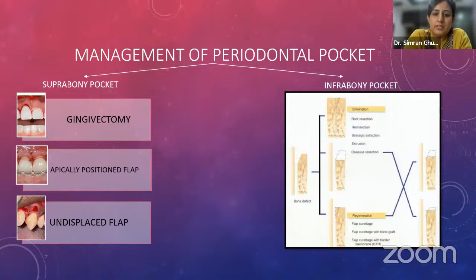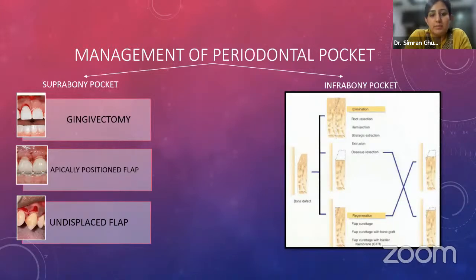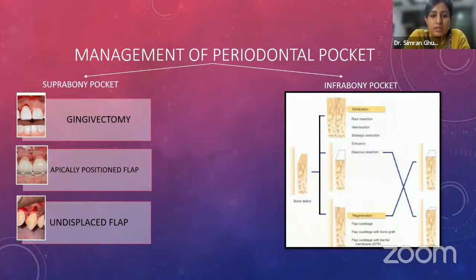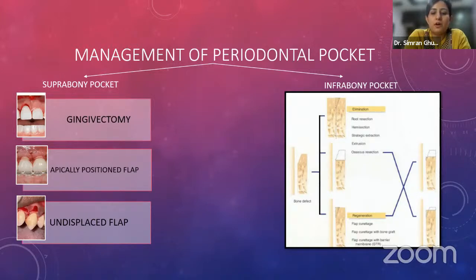For infrabony pockets, the first step is deciding the depth of the infrabony defect. According to Karl Dahl, if the depth is less than 3 mm, we move to pocket elimination — which can include root resection, hemisection, strategic extraction, extrusion, or osseous resection (either osteotomy or osteoplasty). If the infrabony pocket depth is greater than 3 mm, we move to regeneration, which can involve flap surgery with bone grafts or GTR.